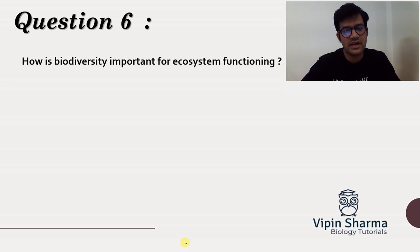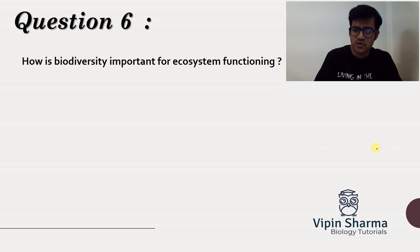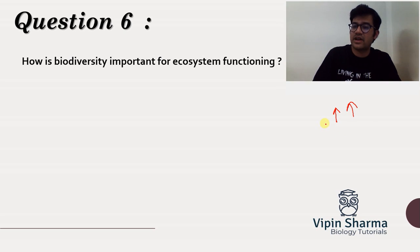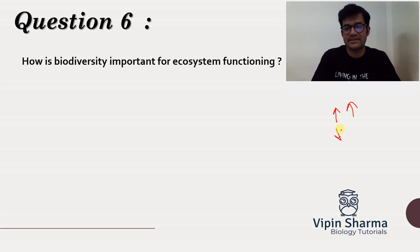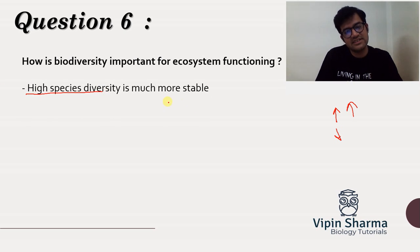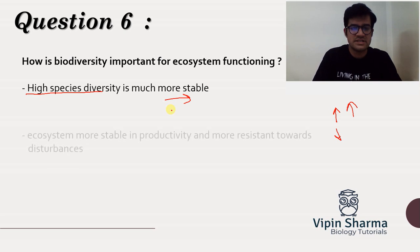The first question asks how is biodiversity important to ecosystem functioning. If you remember, if the biodiversity levels are quite high, the stability of that ecosystem is quite high. If the biodiversity levels are low, then it will definitely impact the stability of that ecosystem. So the first point is: high species diversity is directly related to stability.